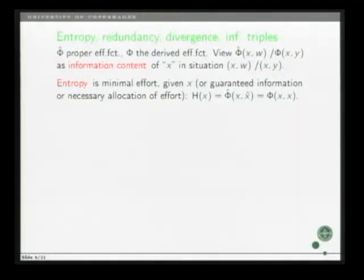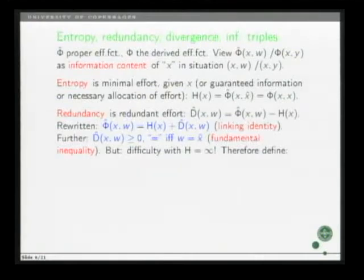Even if you start with an effort function, you may easily find yourself faced with a utility function. Let's introduce entropy, redundancy, and divergence. So, we start with a proper effort function, phi hat, and consider also the derived effort function. And then we use these functions. You could use them as the information content of the statement that x is the true state. Entropy is defined as minimal effort given x. You could also interpret it as guaranteed information, or as seen from the point of view of observer, as necessary allocation of effort.